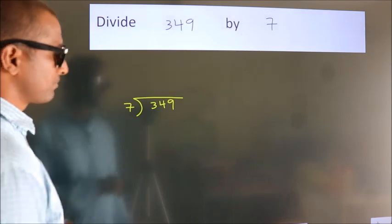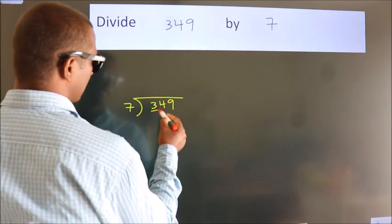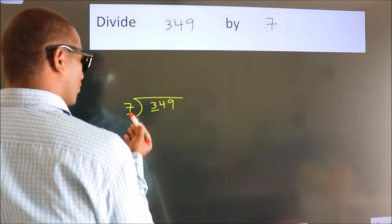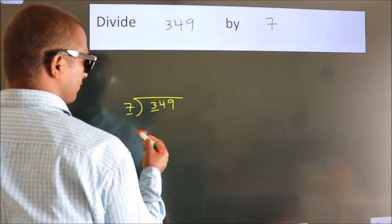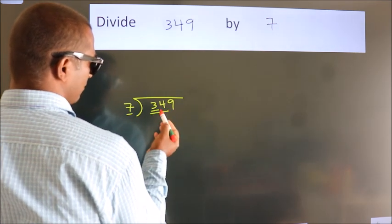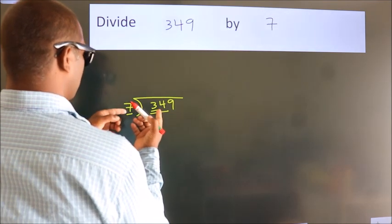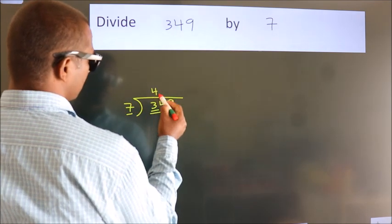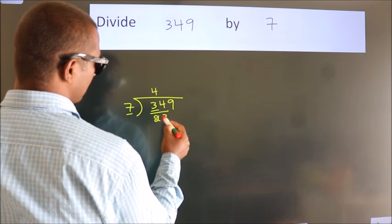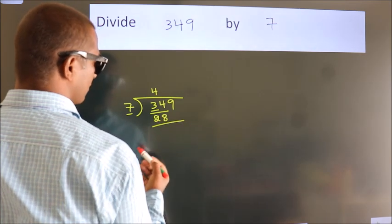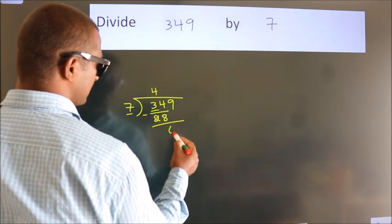Next, here we have 3. Here 7. 3 is smaller than 7, so we should take 2 numbers: 34. A number close to 34 in the 7 table is 7 fours, 28. Now we should subtract. We get 6.